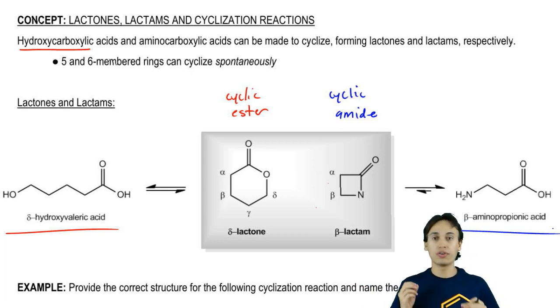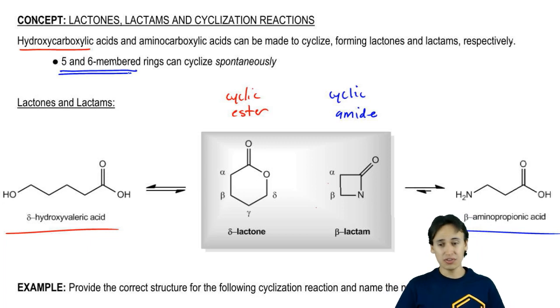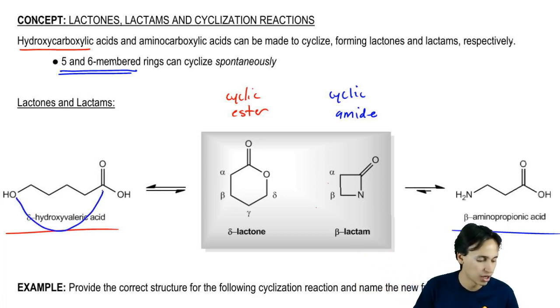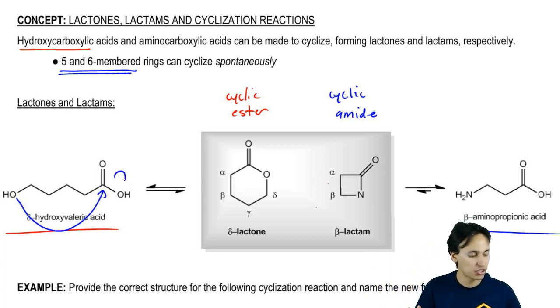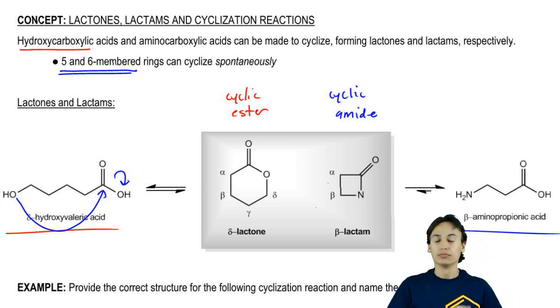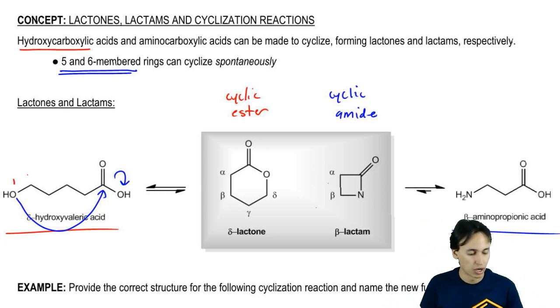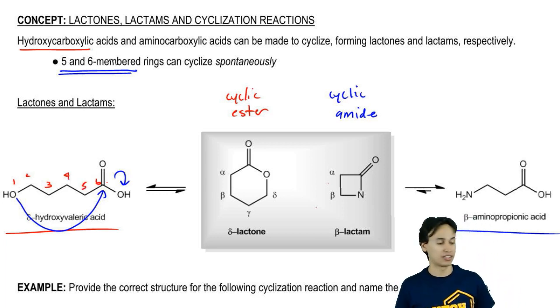These molecules are going to form rings spontaneously when the rings can be five and six-membered. Why? Because these are very stable rings. For example, here I have delta-hydroxyvaleric acid. Notice that when delta-hydroxyvaleric acid cyclizes, what happens is that this O comes in, attacks the carbonyl. You get a tetrahedral intermediate but eventually you kick out this OH. This would just be basically an esterification reaction. Notice that the size of your ring is going to be one, two, three, four, five, six and that's exactly what you would expect so we get a six-membered ring.